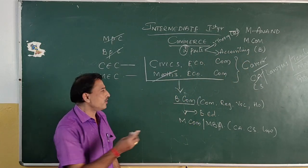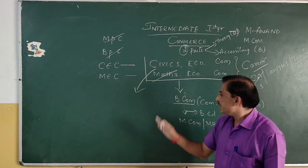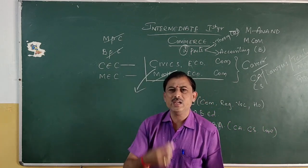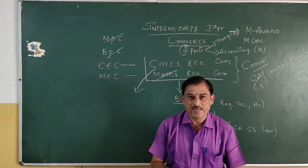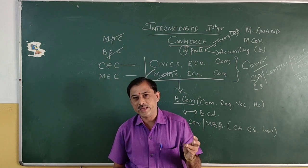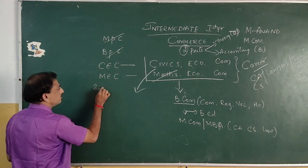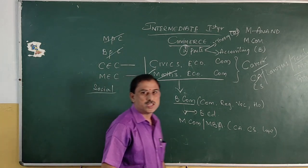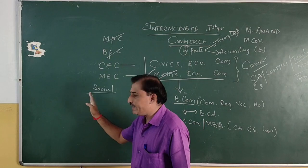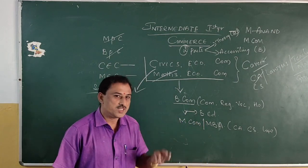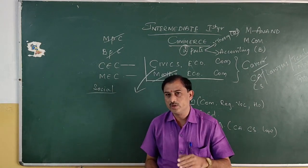In Civics, what you have been learning in 8th, 9th, and 10th class — in school days you have one subject called Social Studies. Social Studies is divided into four parts: Geography, History, Civics, and Economics. Geography deals with the total environment. History deals with what has happened in the past.